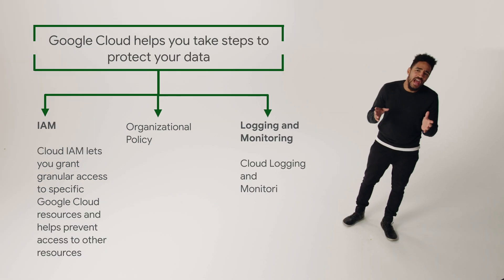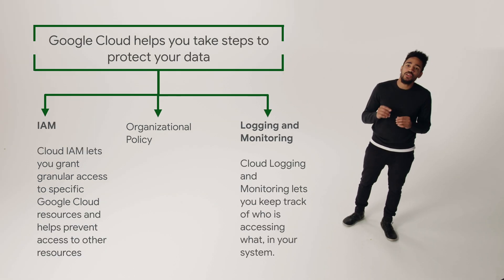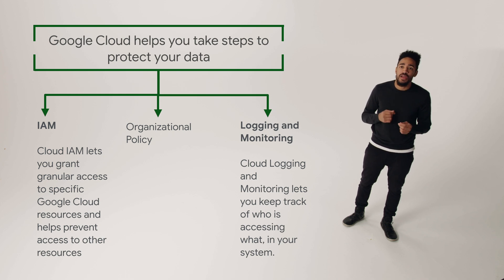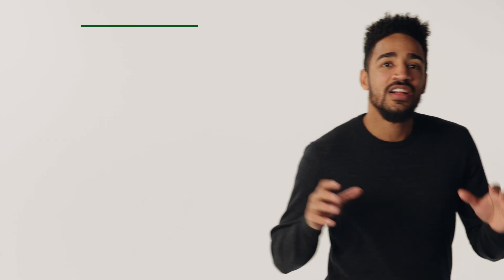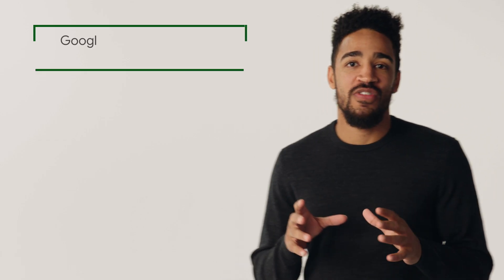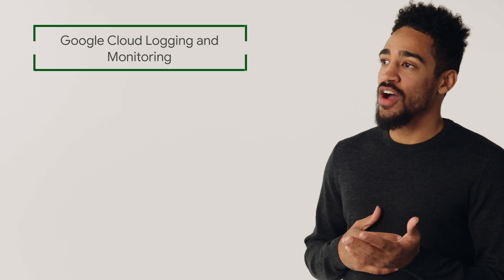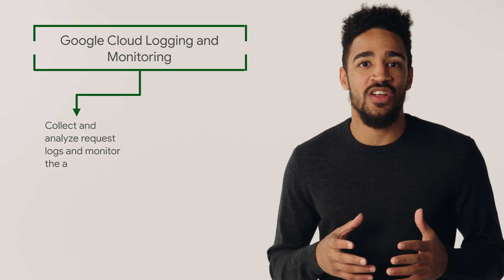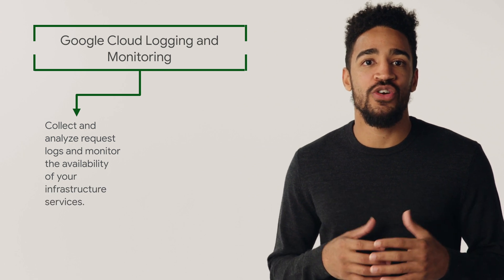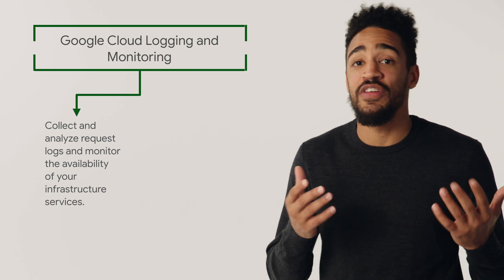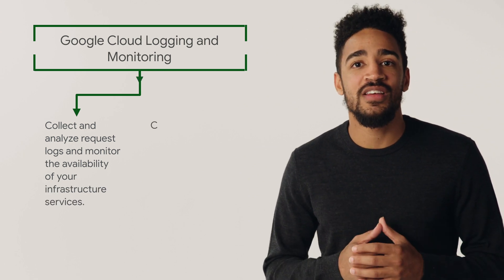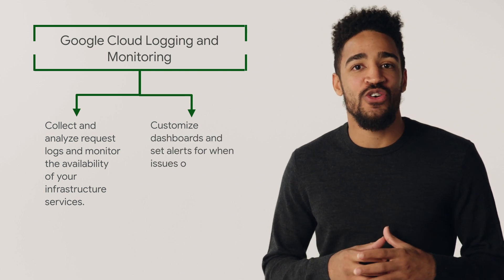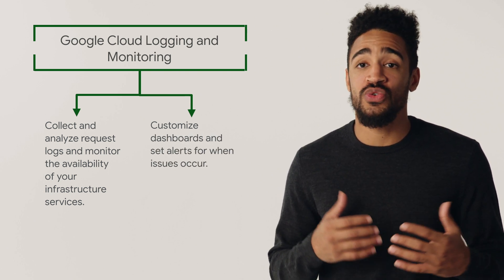Say there was an access violation, though. That's where logging and monitoring can be used to track who is accessing what and automate the information gathering and alerting process as much as possible. Cloud Platform provides tools such as Google Cloud Logging and Google Cloud Monitoring that make it easy to collect and analyze request logs and monitor the availability of your infrastructure services, like VM instances. These tools make it easy for you to create custom dashboards and set alerts when issues occur.